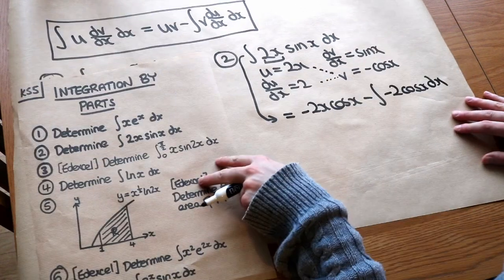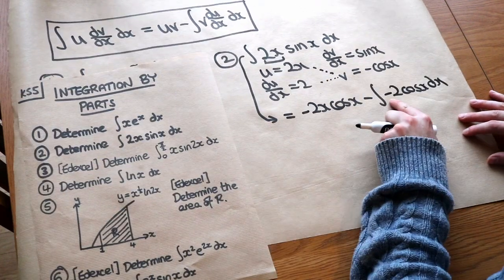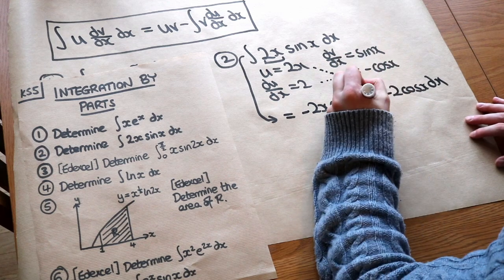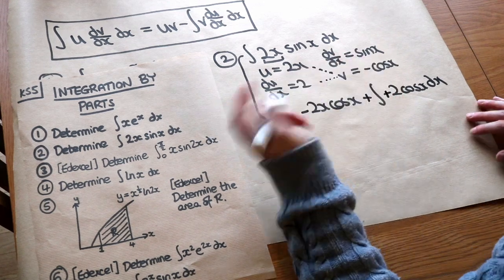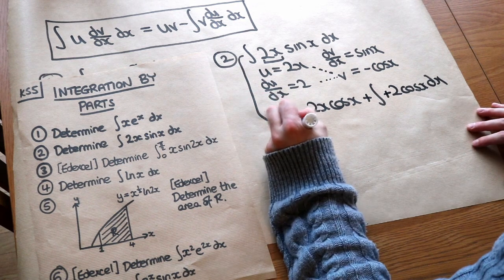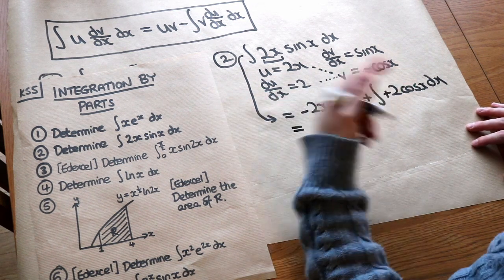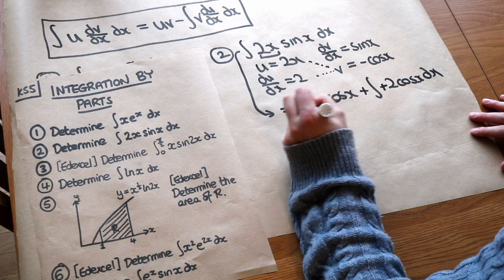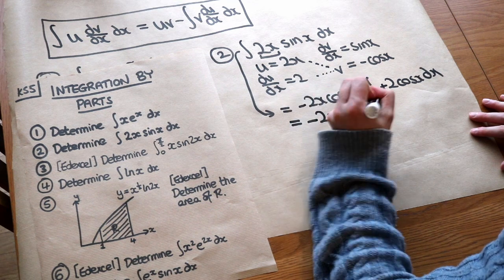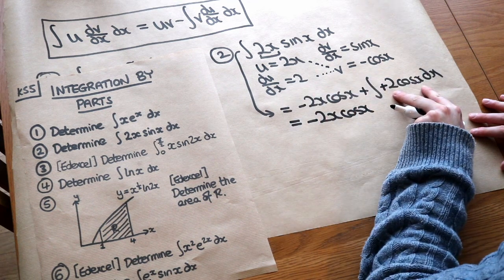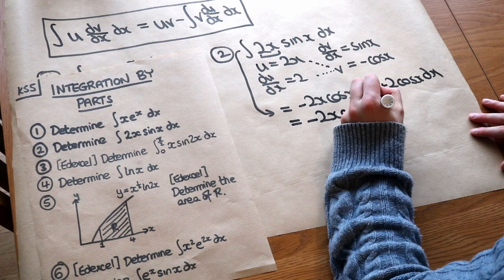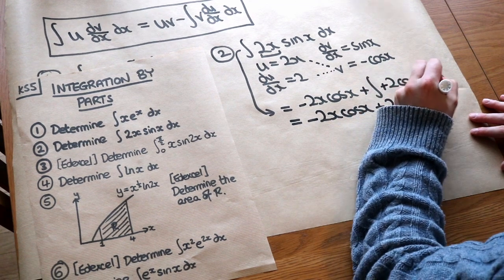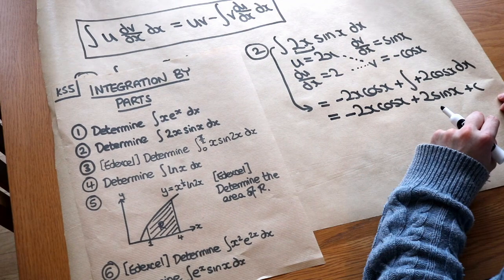A nice little trick: if you've got a minus here and a minus here, you can factor out that minus so they become plus — that means you have fewer negatives to worry about. So now we have −2x·cos(x), and we integrate 2cos(x) which is just 2sin(x). Don't forget the plus c. And we are done.